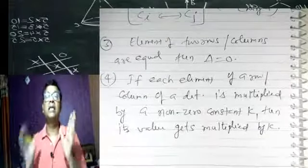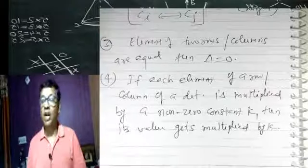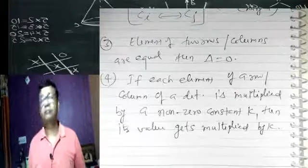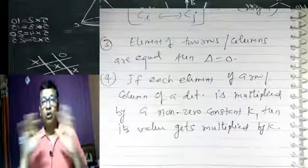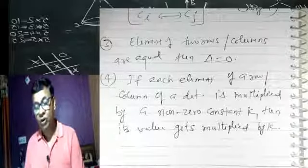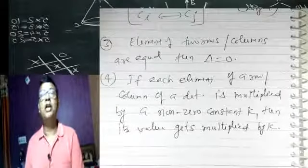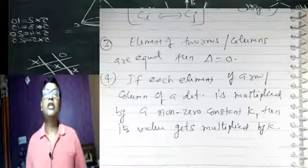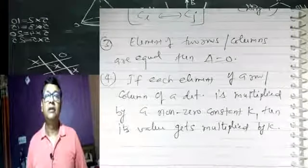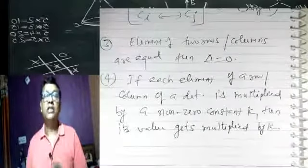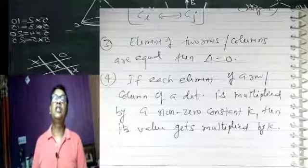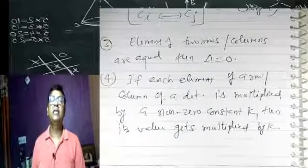Pehle mathematics ko aasaan karte hain — 2 row 2 column se sikhaate hain, yahi kaam 3 row 3 column se bhi aapko seekhna chahiye. Yadi koi bhi ek row ya koi ek column ko kisi certain non-zero number se multiply karte ho — jaise 2 se sab ko multiply kiya — toh jo pehle ka determinant hai, woh bhi 2 se multiply ho jaayega. Agar 2 row aur 2 column mein koi property fit baithti hai, toh 3 row 3 column mein bhi woh property fit baithegi.